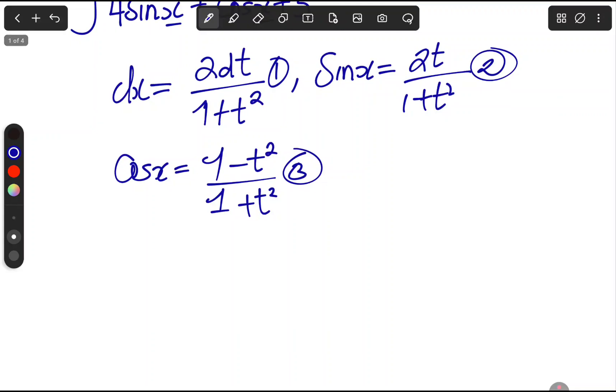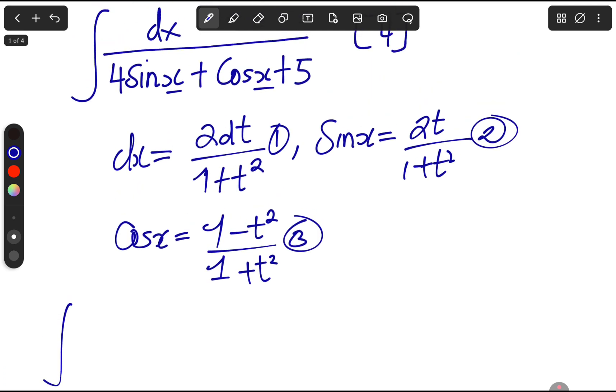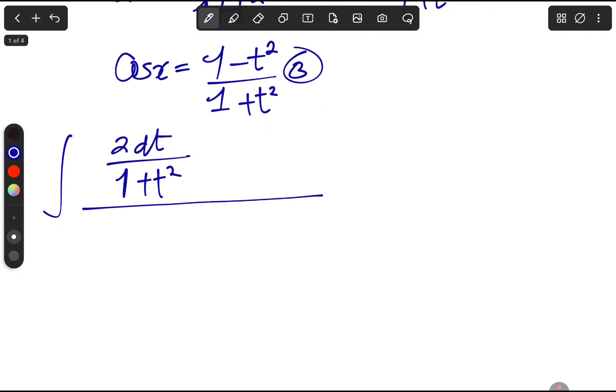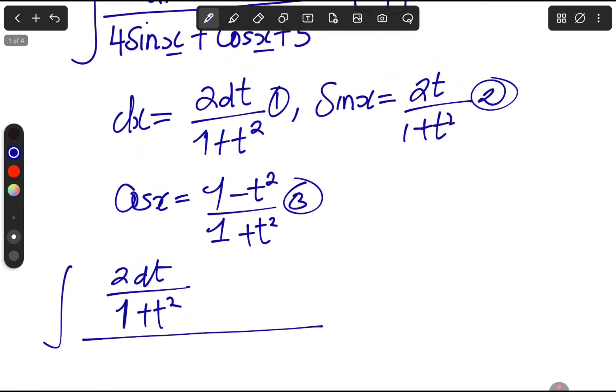We move on. Now we are going to substitute these into that. What does this mean? This means in our integral, we are going to see the integral. What do we have here? dx, we are going to put in 2dt over 1 plus t squared.